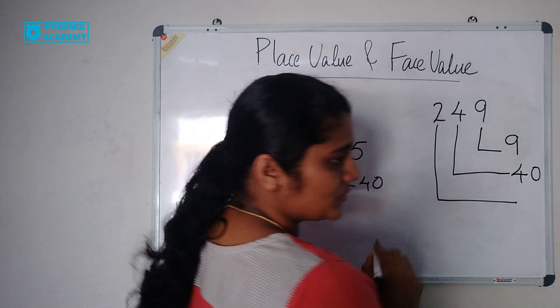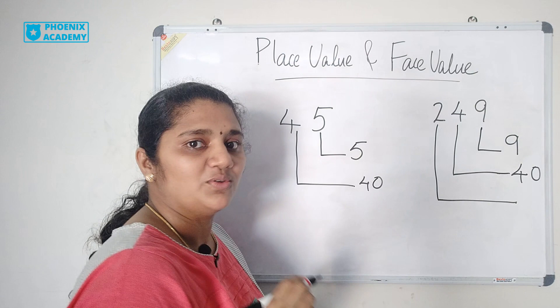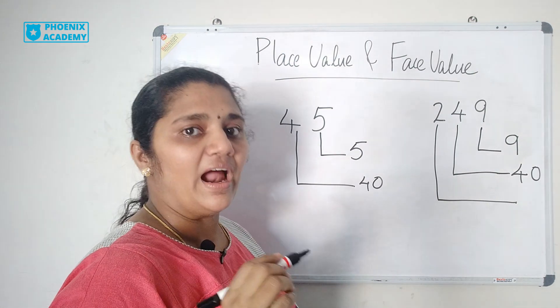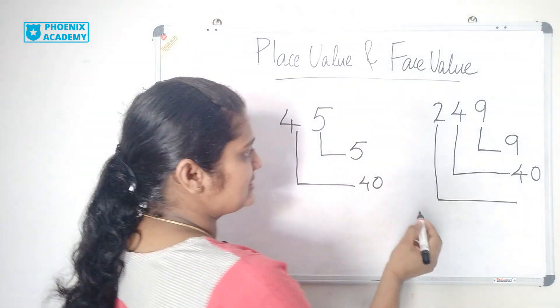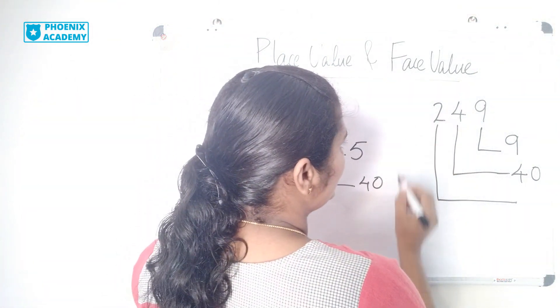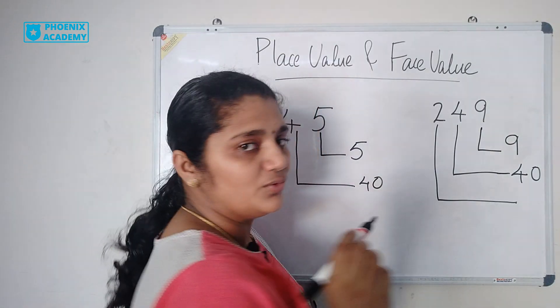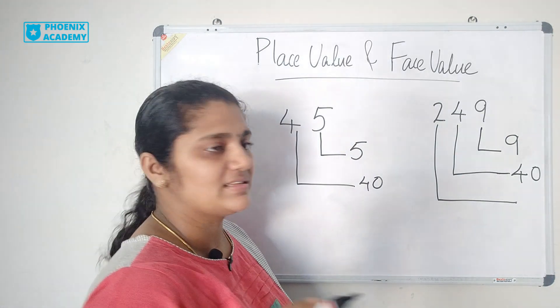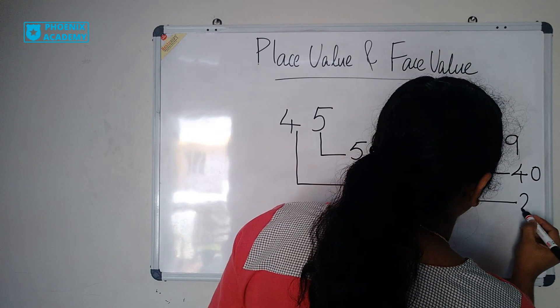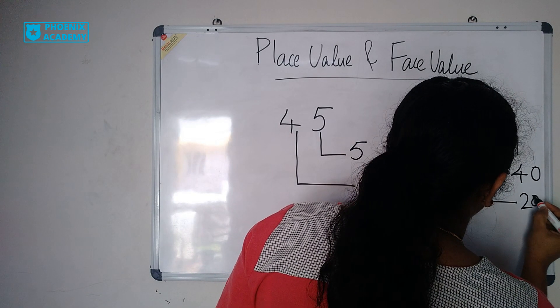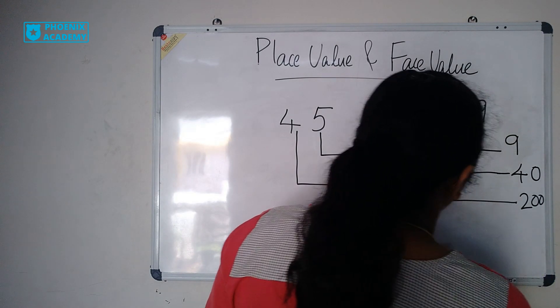2 is in which position? 2 is in hundreds position. So place value of 2 is 2 hundreds — that is 200.